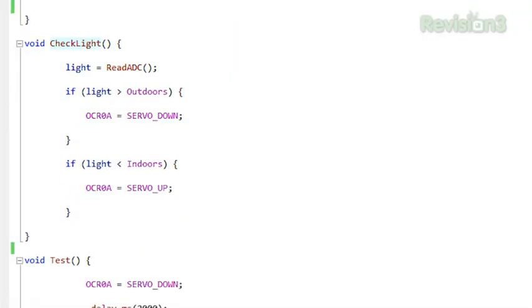Alright, so let's comment out the test section that we just drove. And now we're going to comment back in check light. And what check light is going to do is this: first it's going to read the ADC, which means it's going to get the ADC value from the photosensor.